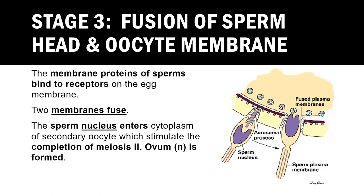The entry of the sperm nucleus into the cytoplasm of the secondary oocyte stimulates the completion of meiosis II. The secondary oocyte is actually arrested at metaphase II. Now it is able to proceed to anaphase II and telophase II, followed by cytokinesis, to produce a larger haploid ovum and a smaller second polar body.